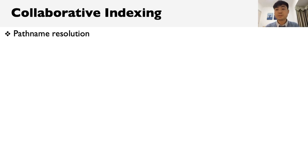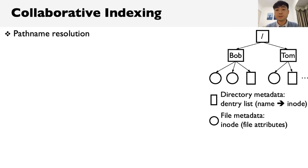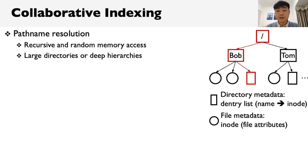A file system manages storage space into a hierarchical directory consisting of two important metadata structures: the directory entry (dentry) list, owned by each directory, which maps a file name to an inode number; and the file metadata, also known as the inode. Finding a specific file requires recursive lookup from the root node to the target directory, which may incur many random memory accesses. This overhead becomes more serious when a directory contains a huge number of subfiles or the directory depth is high.